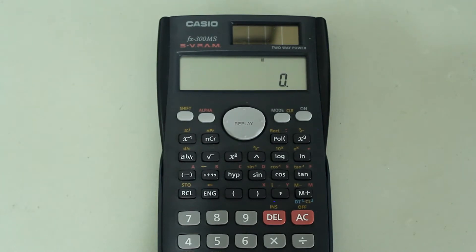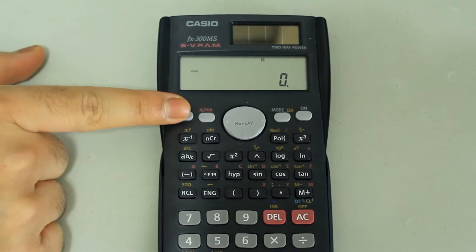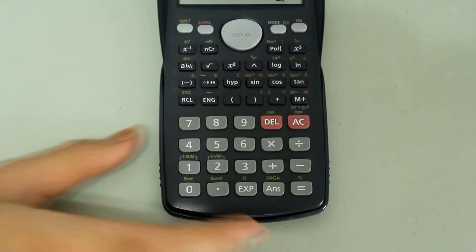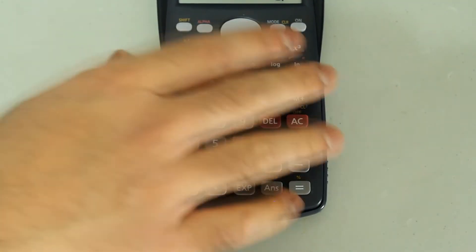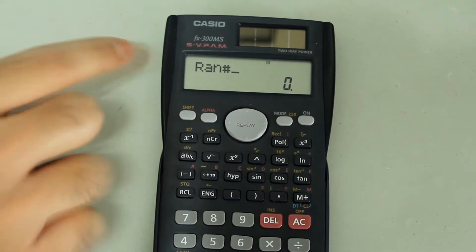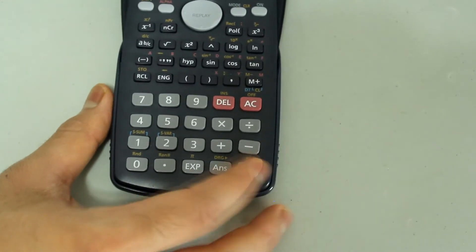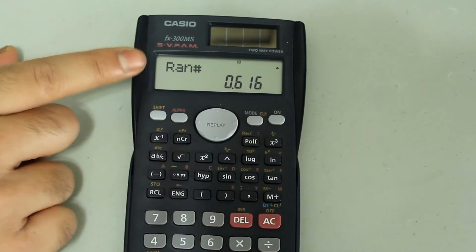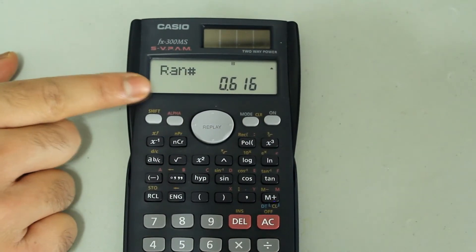Without further ado, let's get to it. Press the shift button followed by the decimal button, and then the random number generator comes on the screen. Just press equals, and you'll notice that a number is generated between 0 and 1.